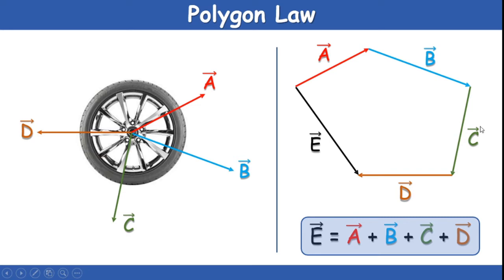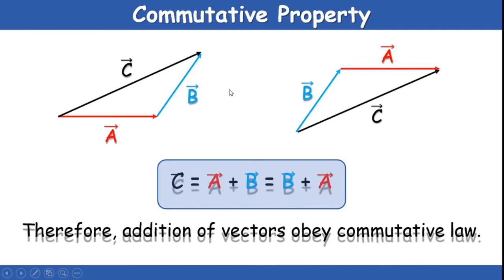For Polygon Law: suppose there are four vectors A bar, B bar, C bar, D bar. If we draw the polygon using these four vectors, we get one new resultant vector called E bar, starting at A and ending at D. So E bar equals A bar plus B bar plus C bar plus D bar.